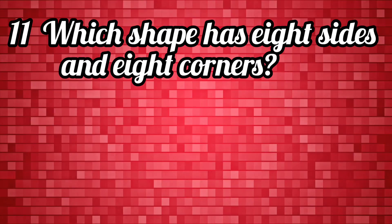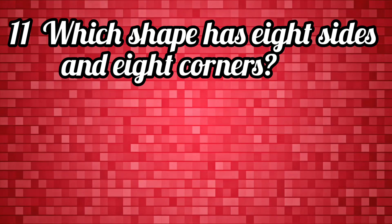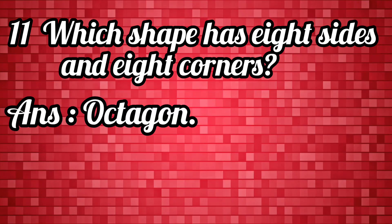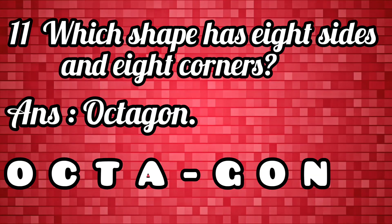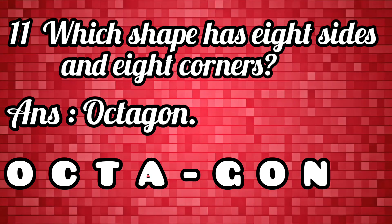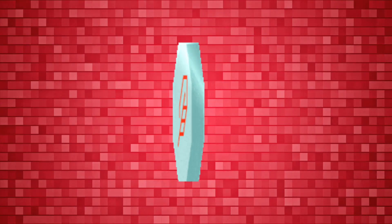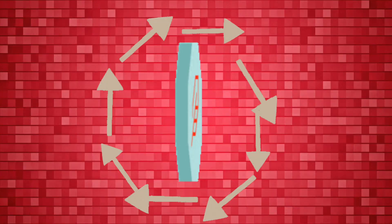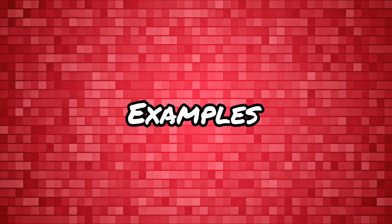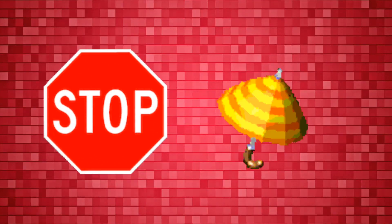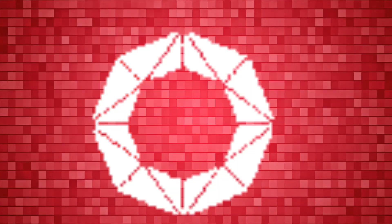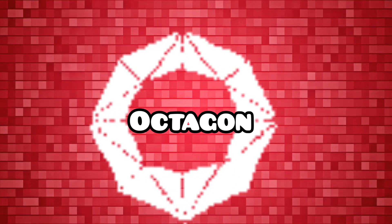Which shape has eight sides and eight corners? Octagon. O-C-T-A-G-O-N. An octagon has eight sides and eight corners. For example, the stop sign and an open umbrella. O-C-T-A-G-O-N, octagon.